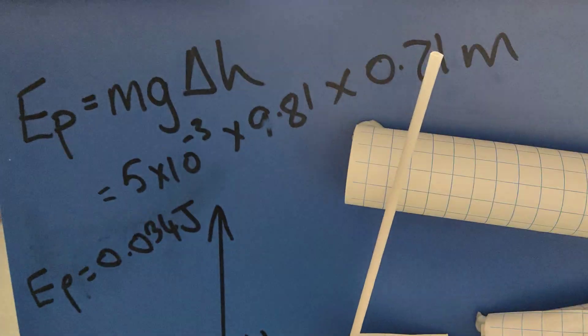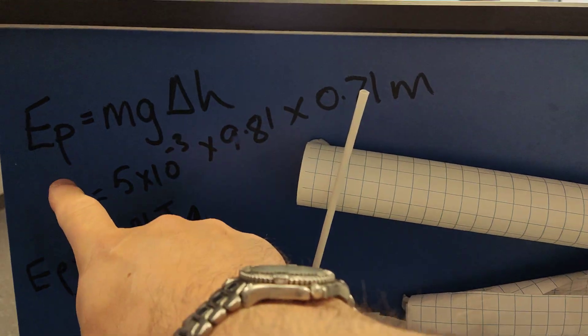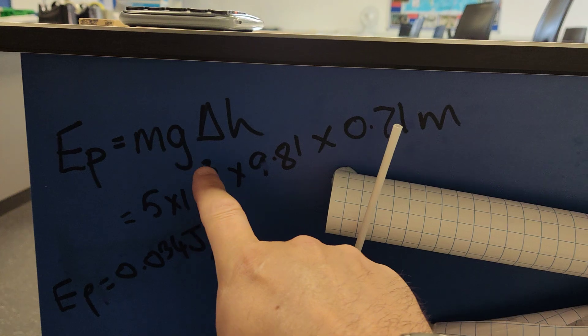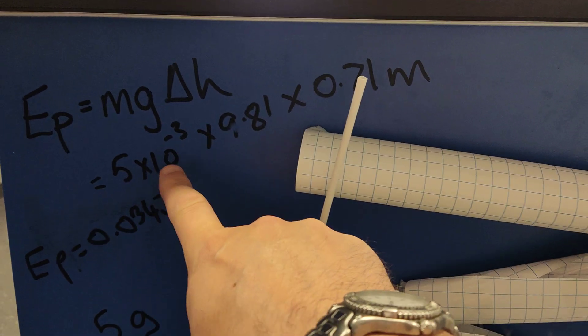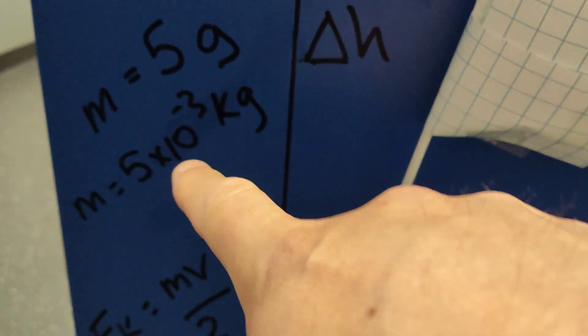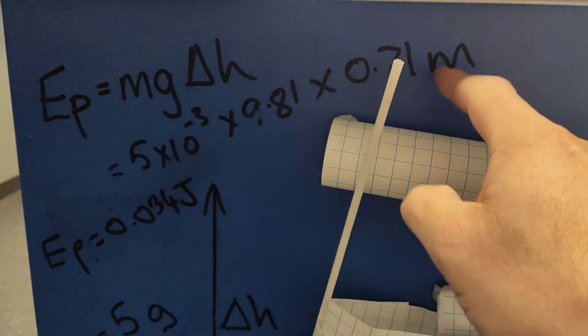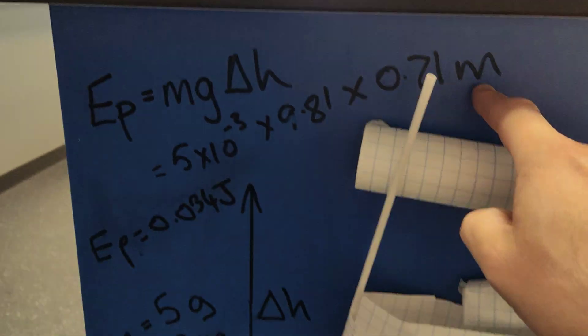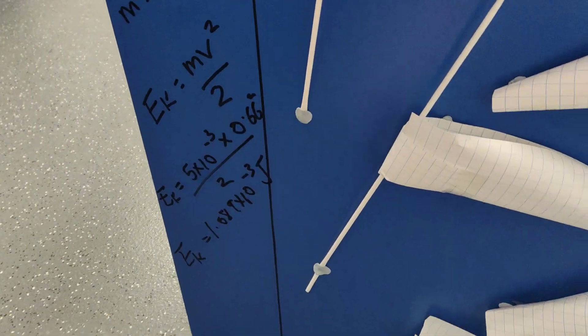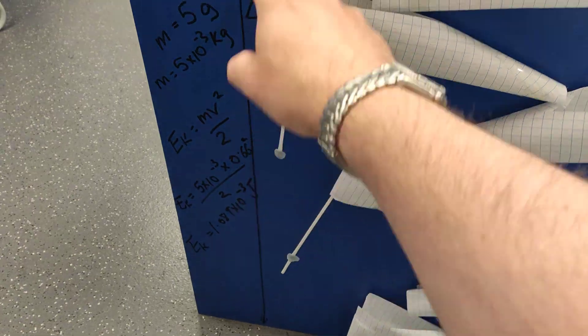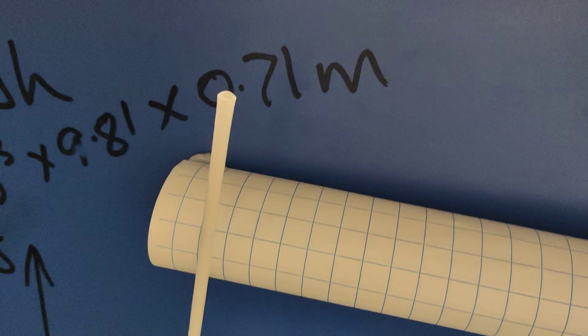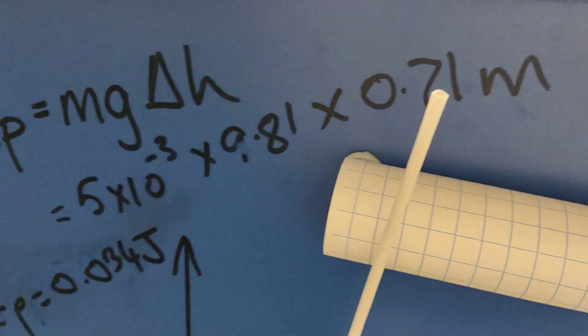So we've got E potential equals mgh — that's 5×10⁻³ kilograms (because the mass is 5 grams) multiplied by gravity, multiplied by the height. I measured the height drop from top to bottom as 71 centimeters. That gives me my potential energy.